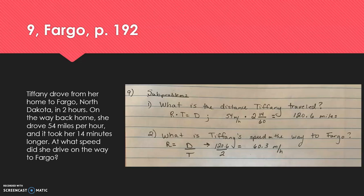Well, if rate times time equals distance, then rate equals distance over time. The time now is two hours even. So 120.6 divided by two gives us 60.3 miles per hour.